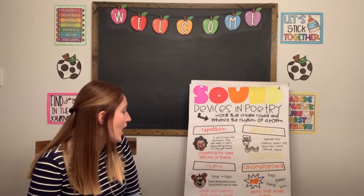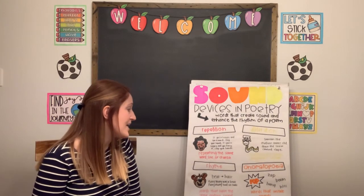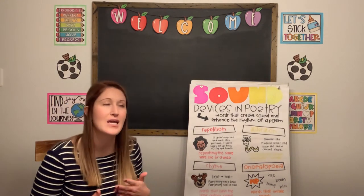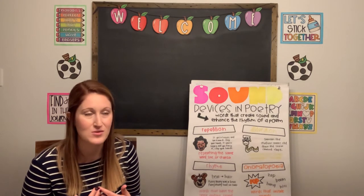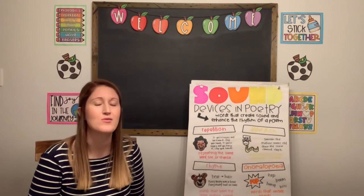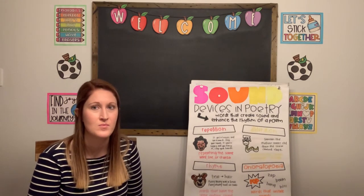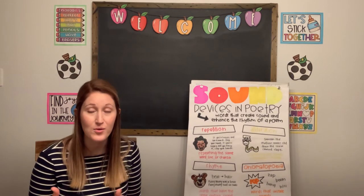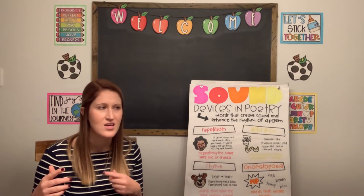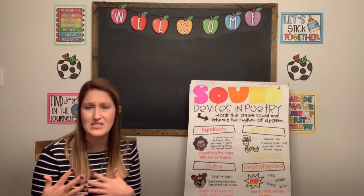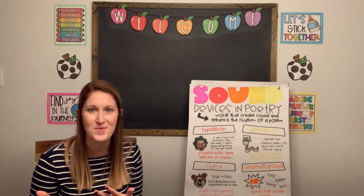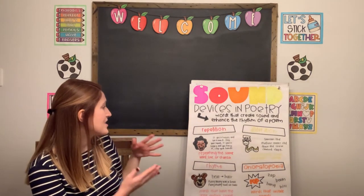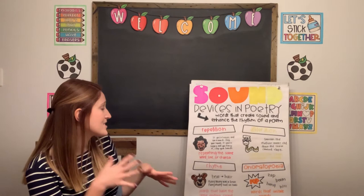We also have onomatopoeia. Onomatopoeia are words that imitate sounds, like zoom, boom, bang, hiss. They imitate sounds we might hear from animals or other things. Examples include roar, crash, pow. I like to think of them as words you might see in comic books, because we often see onomatopoeia there. These are the different sound devices we can see in poetry that help to create sound and rhythm.